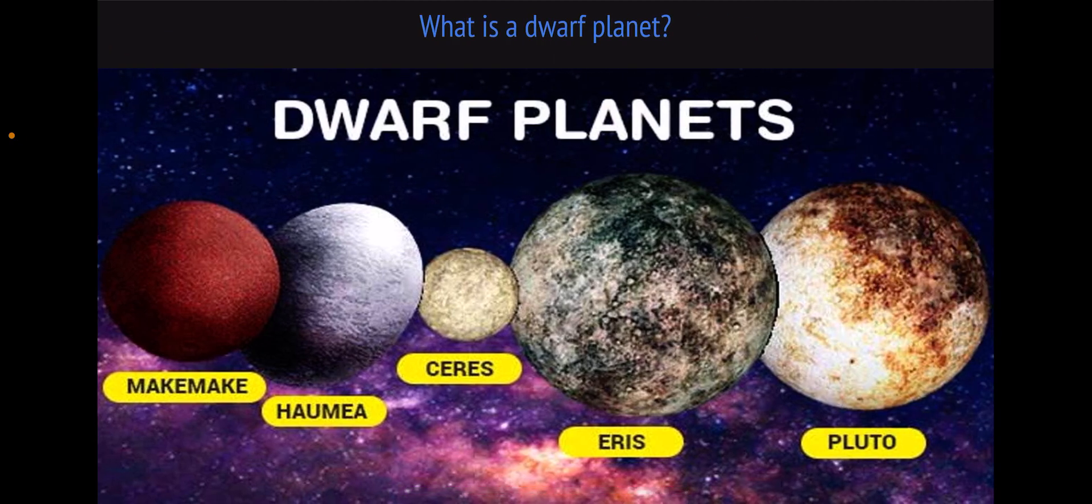This resulted in Pluto being classified as a dwarf planet. A dwarf planet is a planet that fails to meet the third criteria of clearing the neighborhood. This new term was made to create a more consistent framework for categorizing objects in our solar system and beyond.